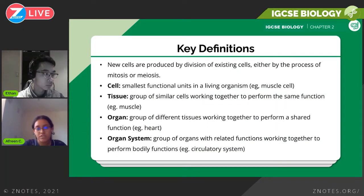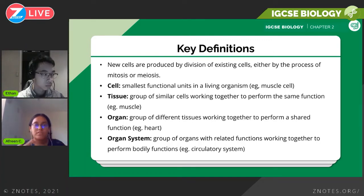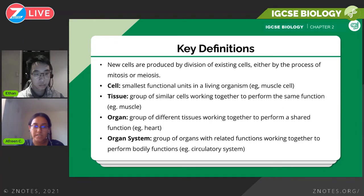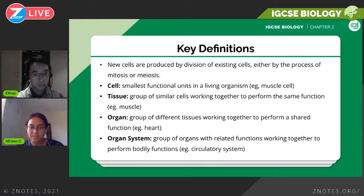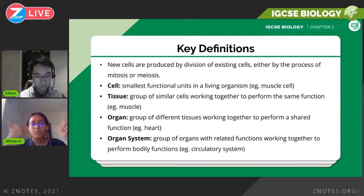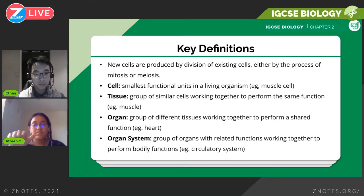Now for key definitions: new cells are formed by cell division, and there are two cell division processes you need to know — meiosis and mitosis. Both will be covered in more detail in another chapter. You need to know about cells, tissues, organs, and organ systems. Cells are the smallest functional units in a living organism. Examples include muscle cells, nerve cells, and red blood cells.